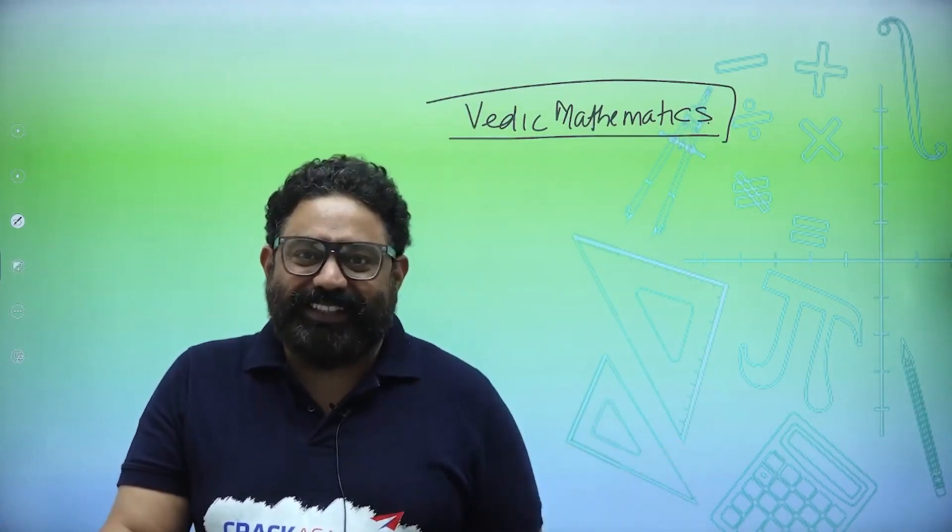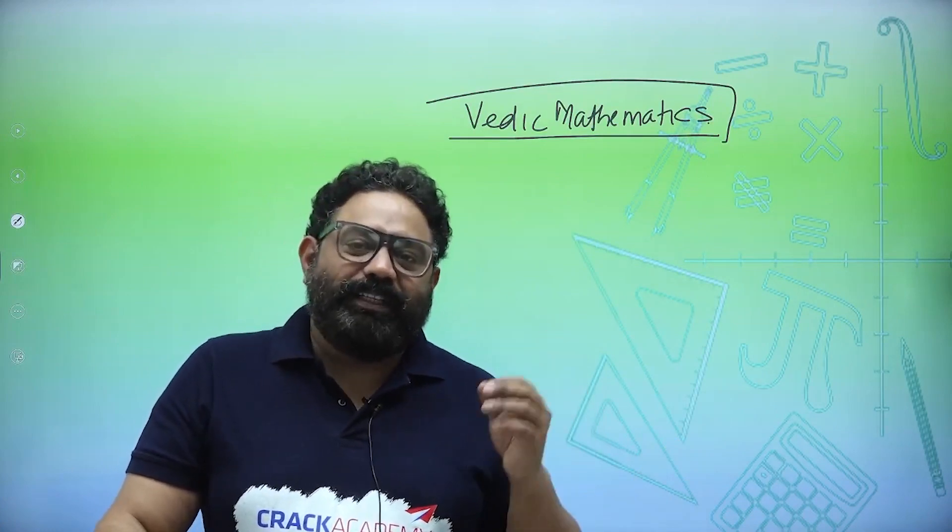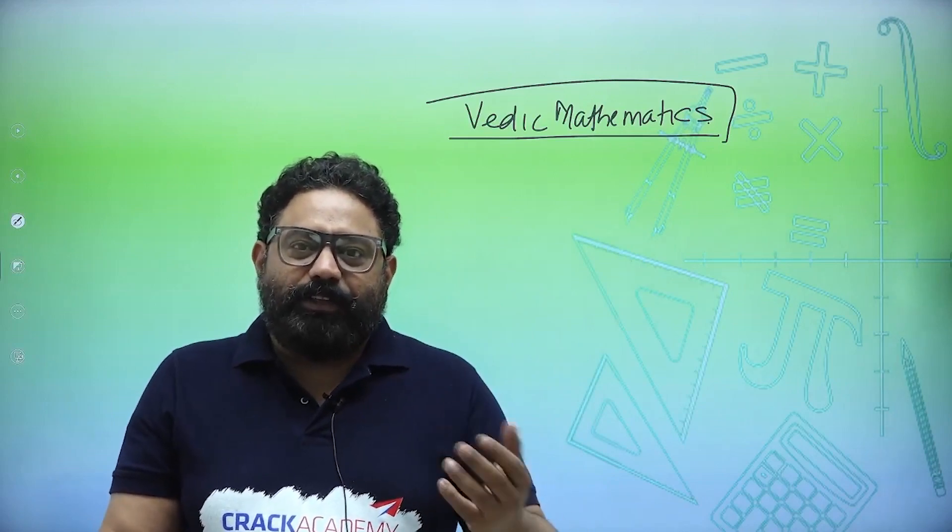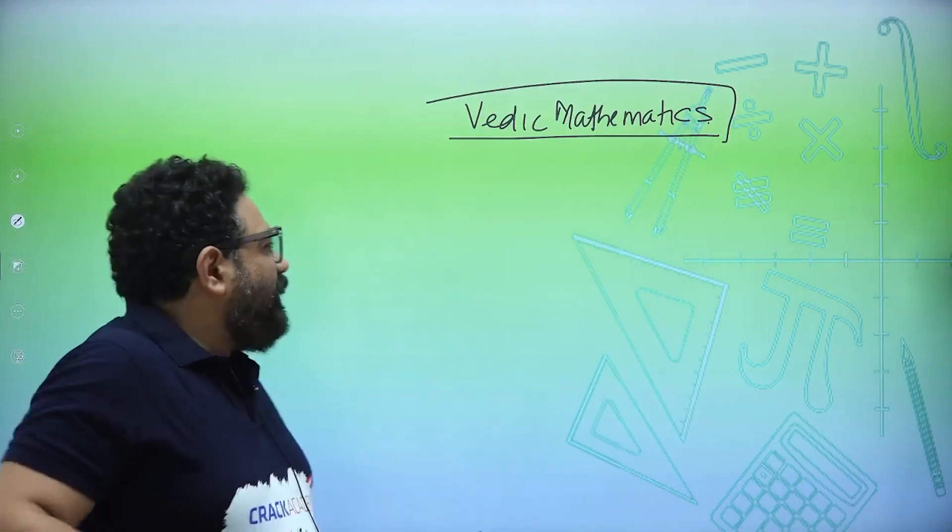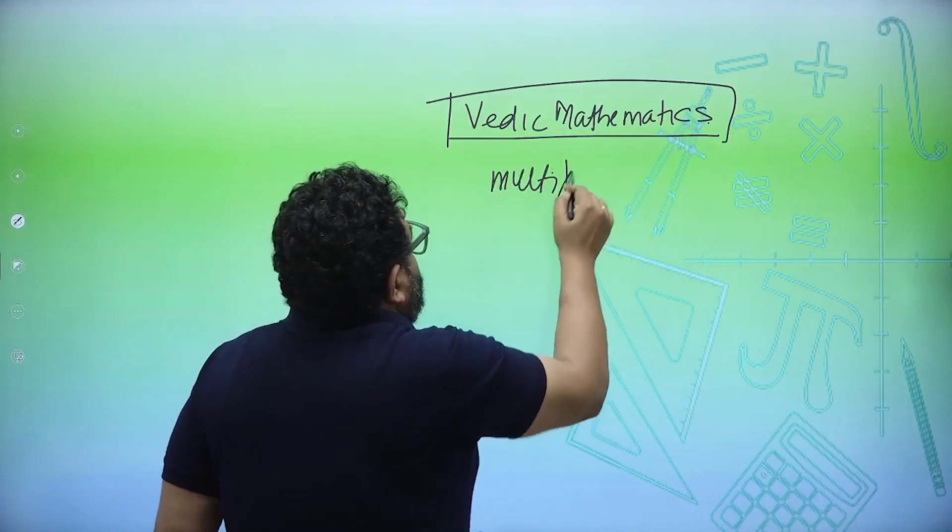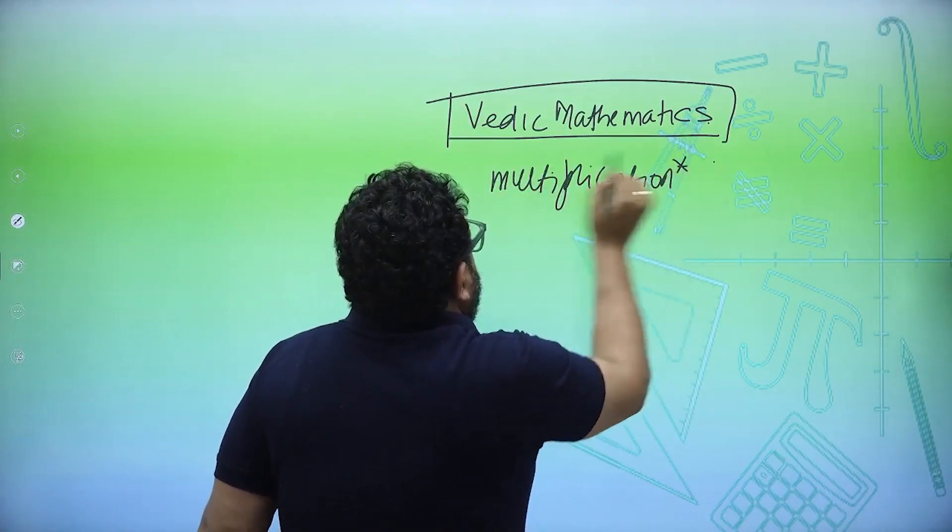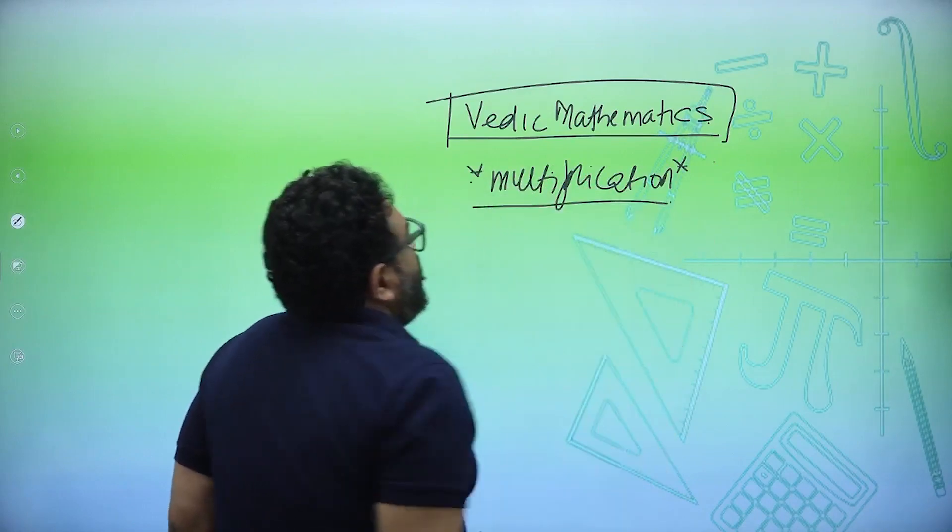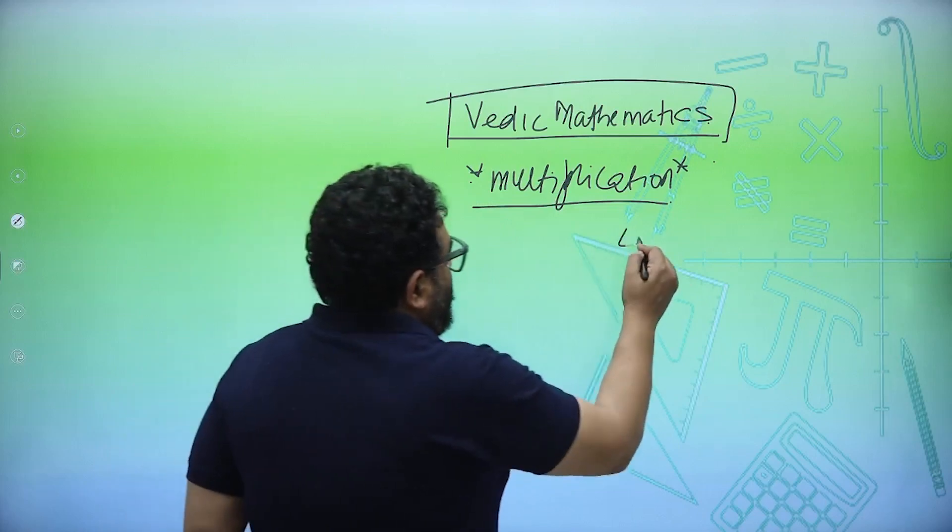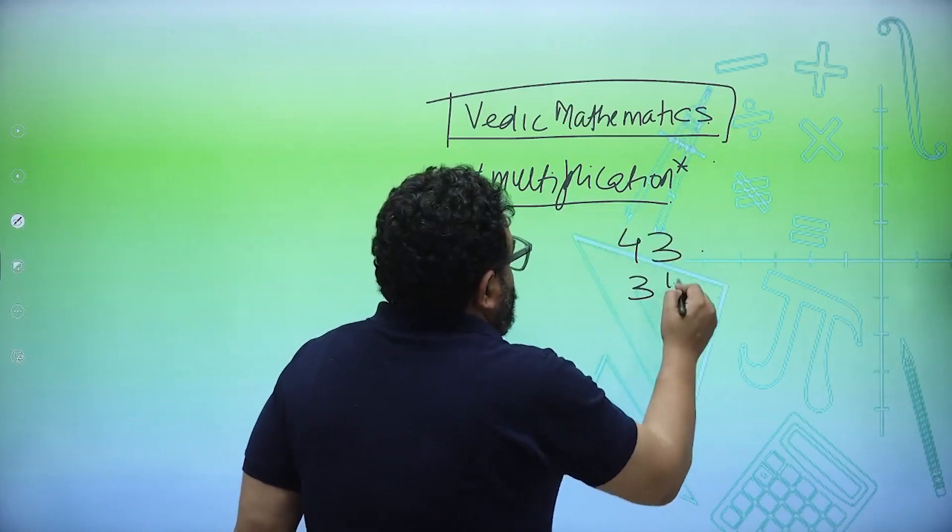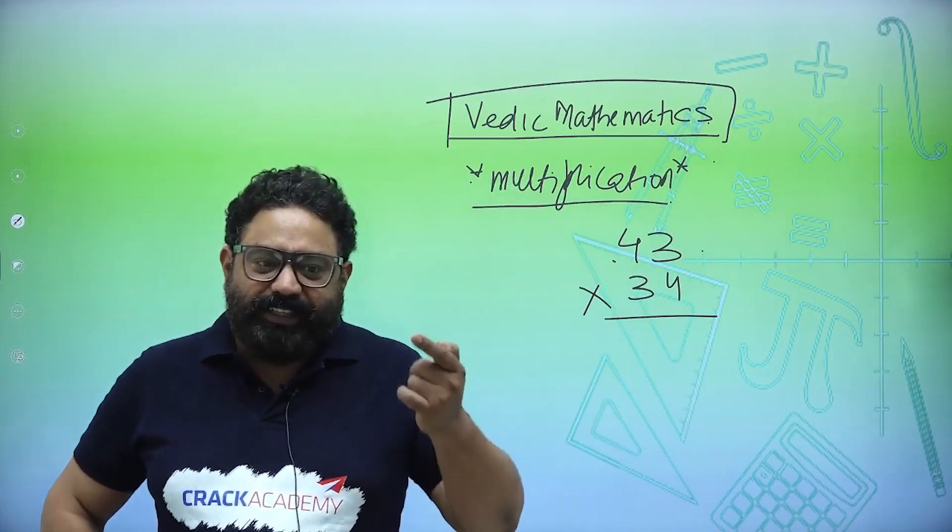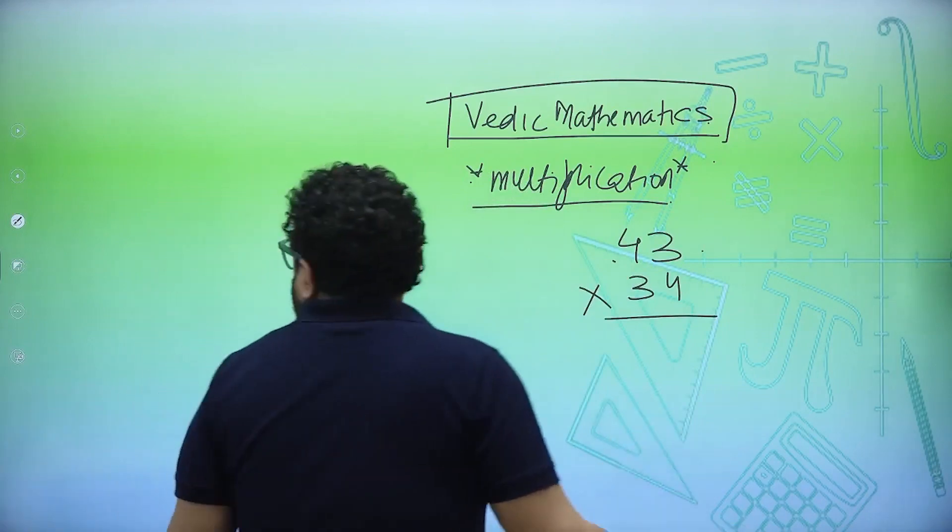What exactly is Vedic math? It's basically use of zeros to make your calculations faster. I'm just talking about multiplication. I hope you would love these tricks. If I say what is 43 into 34, you do it in two steps, I'll do it in a single step. Just note down the steps.